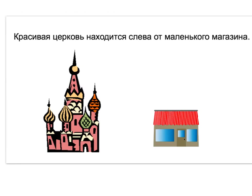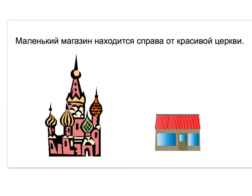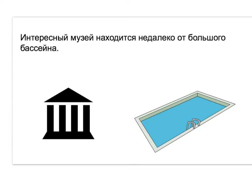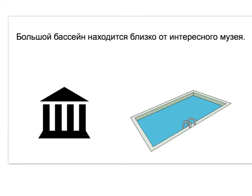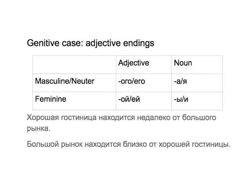In this video we're going to talk about the genitive case of adjectives. In this summary chart, you can see the adjective as well as the noun endings for genitive case. We already knew that masculine and neuter nouns end in А or Я. Their adjective endings we see end in ОВА or ЕВА.